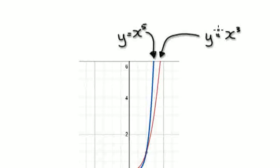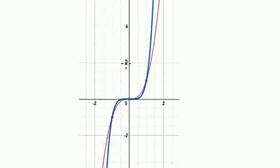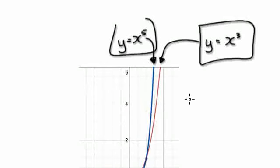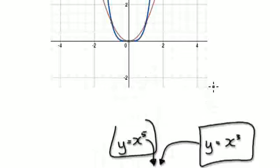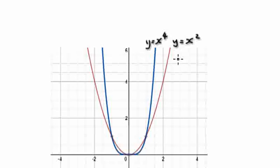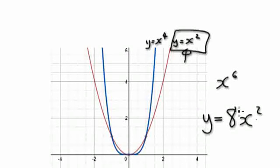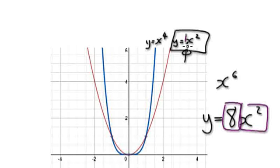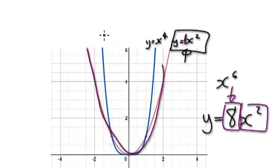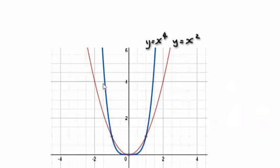Get yourself a graph plotter and punch in something like this, then compare the two. You could stick a number in front of x squared, like 8x squared. Stick with x squared and change the number in front of it — in this case it's 1. You could stick an 8. At the moment you have y equals x squared.